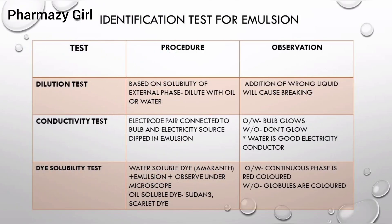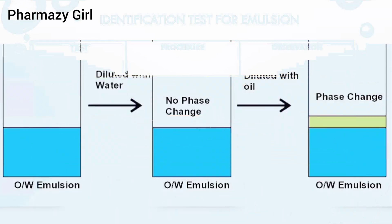The first test is the dilution test. The dilution test is based on the solubility of the external phase, where addition of the wrong liquid will cause breaking of the emulsion or separation.